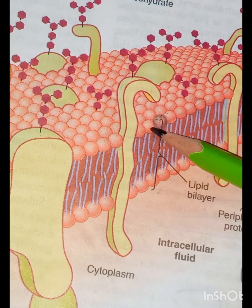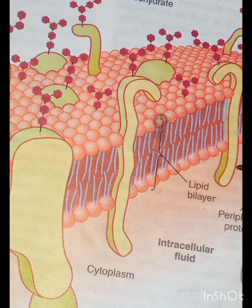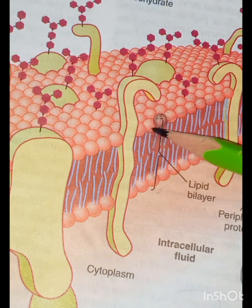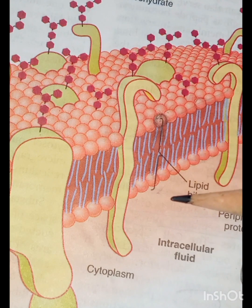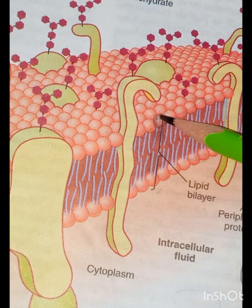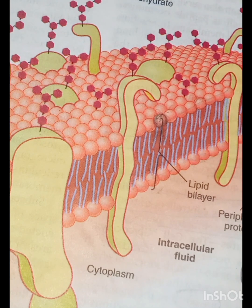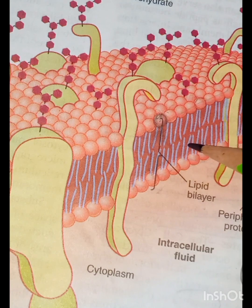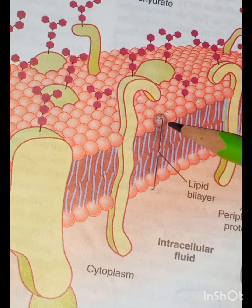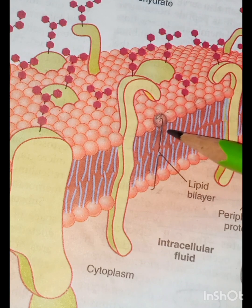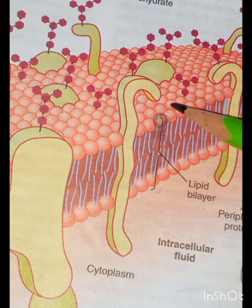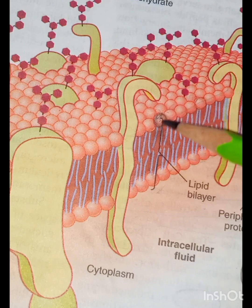This phospholipid head is polar or hydrophilic because it has the negatively charged phosphate group. The two tails are made up of fatty acids, so they are nonpolar or hydrophobic. The hydrophobic portion of the phospholipid molecules is repelled by water but mutually attracted to one another, and they have the tendency to attach in the middle of the membrane. The hydrophilic phosphate portions constitute the two surfaces of the cell membrane, in contact with intracellular water on the inside and extracellular water on the outside.